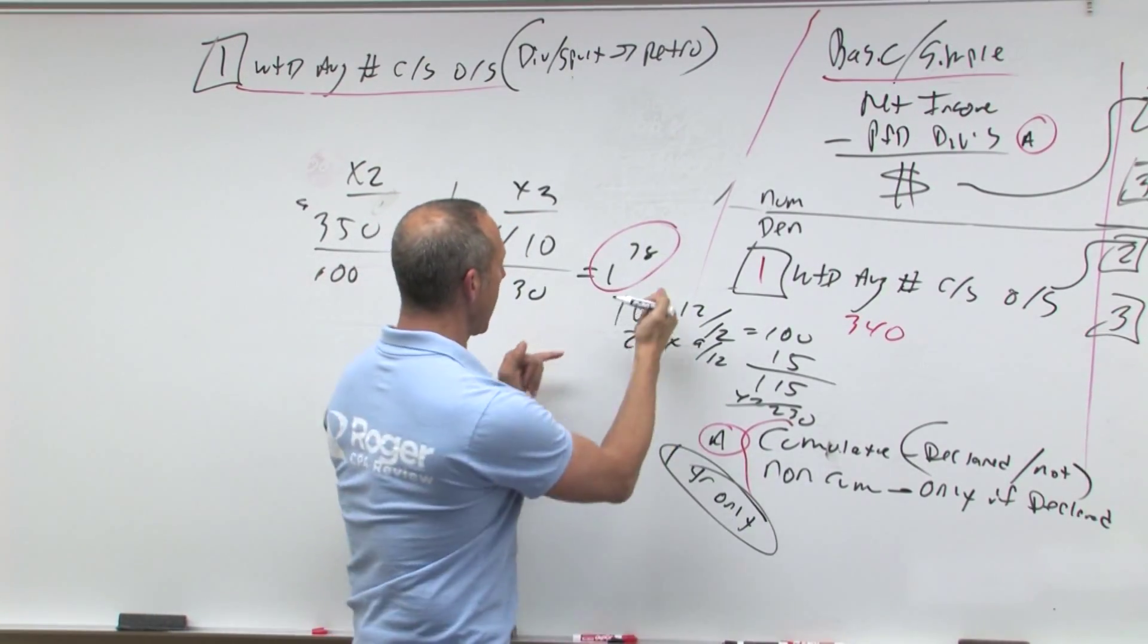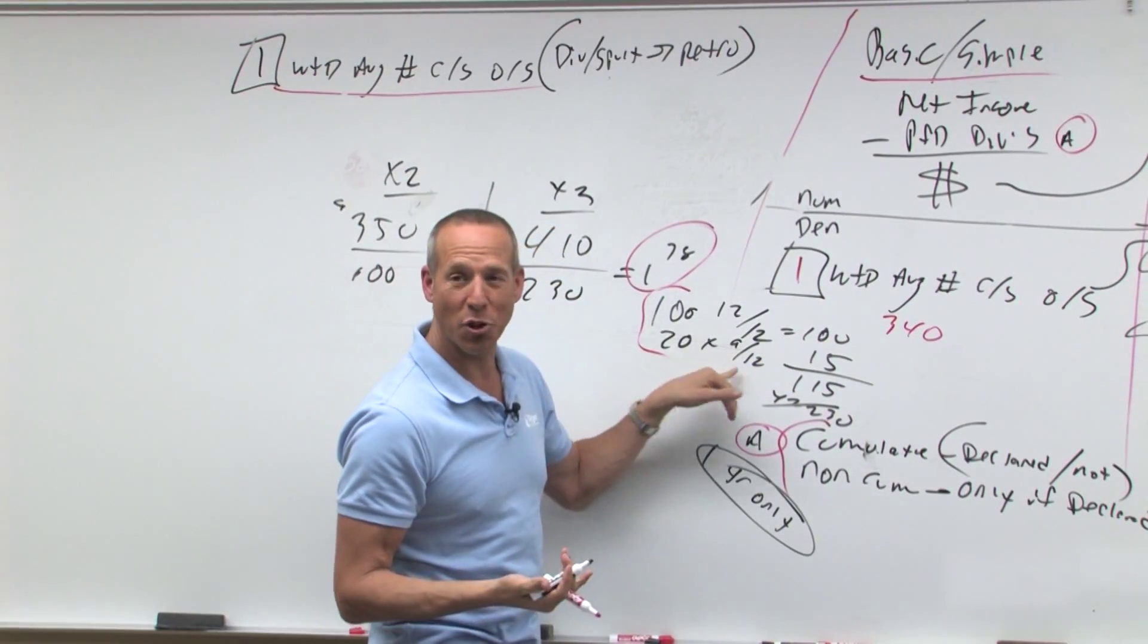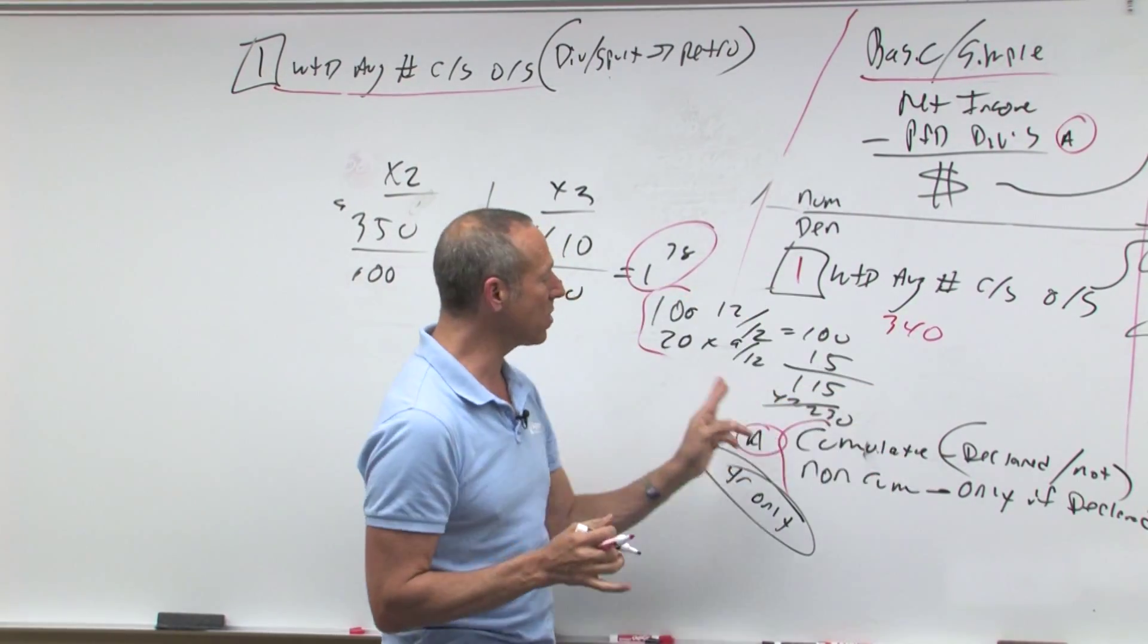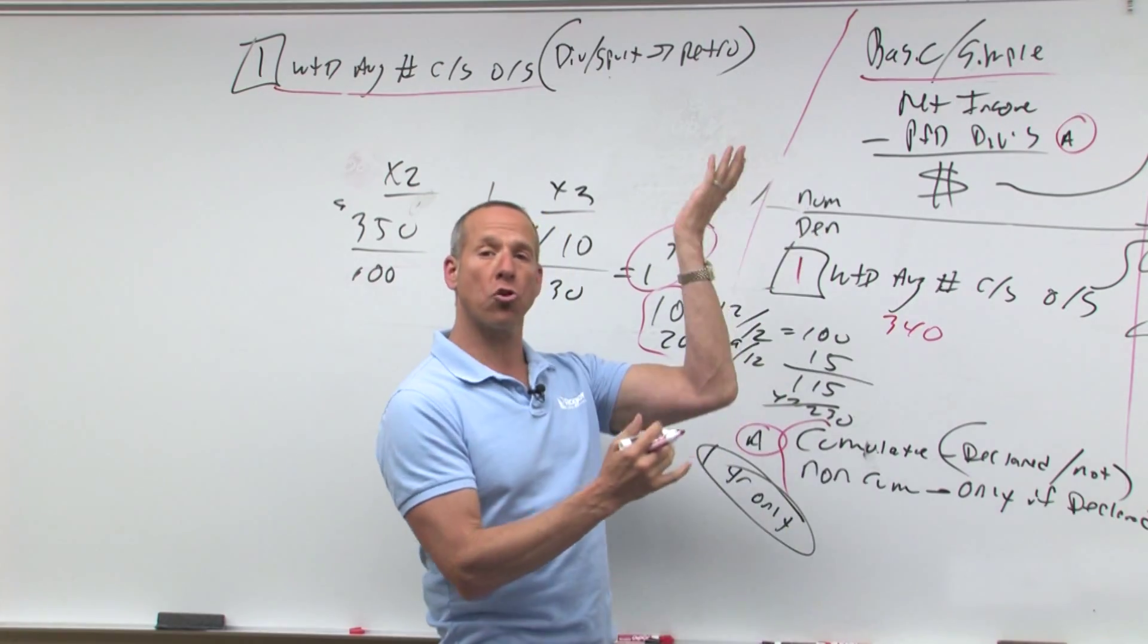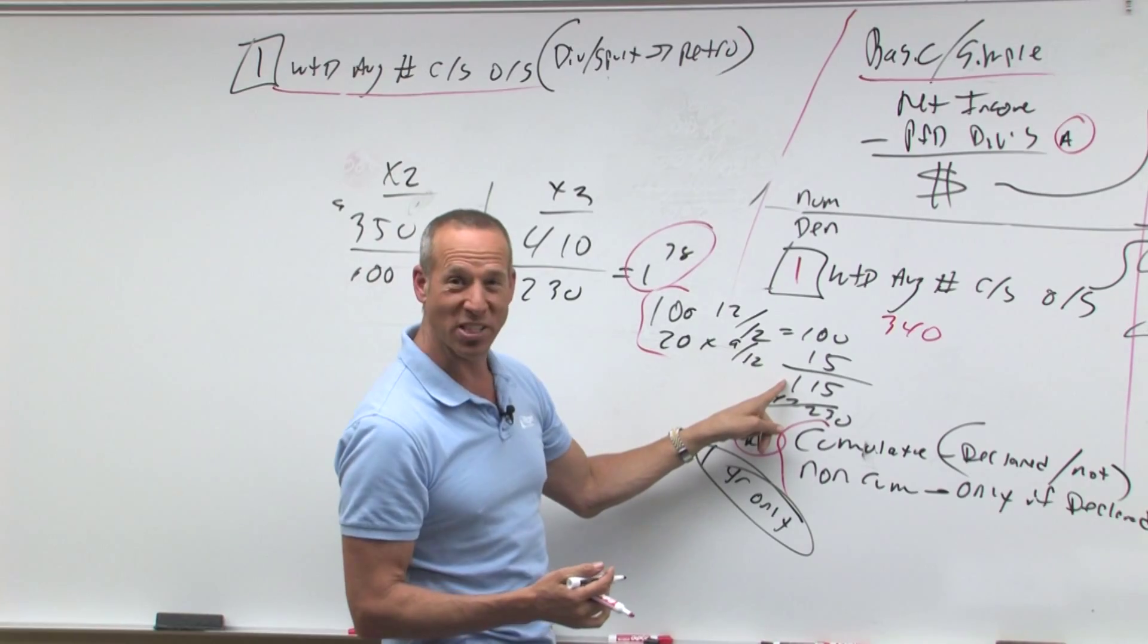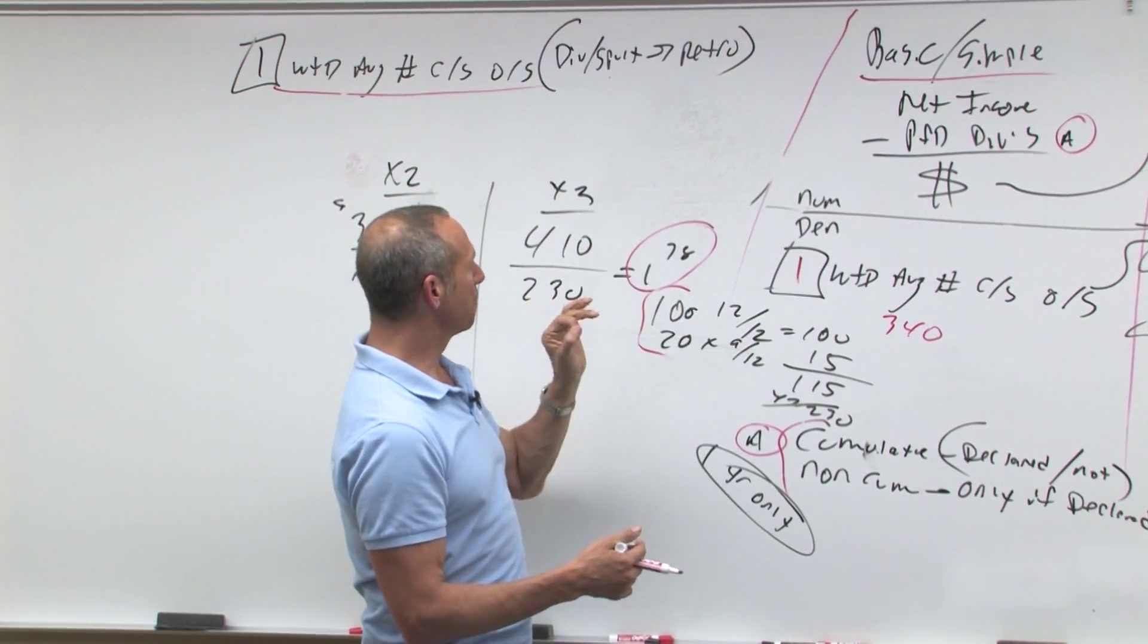Now let me back up. How did I get weighted average? 100 for the whole year, 12 twelfths. We have 20,000 for three quarters of the year, which would be from April 1st to the end of the year. That's 15. That's 115. Two for one split retroactively goes back and hits everything that preceded it. 115 times two is 230.